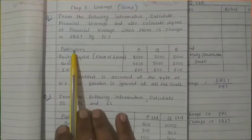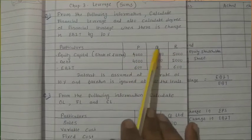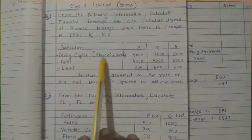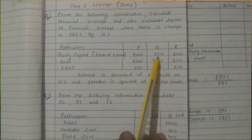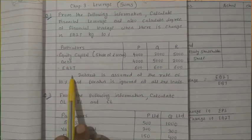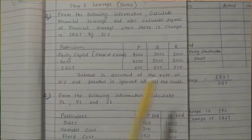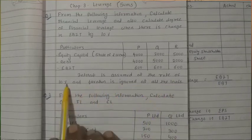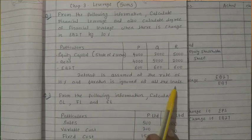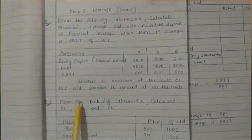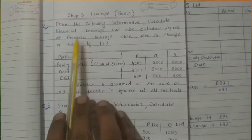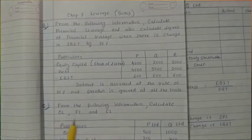So, particulars P, Q and R — three firms are given. Equity share capital of rupees 10: 4000, 2000, 5000. Debt: 4000, 5000, 2000. And EBIT: 600, 600, 600. Interest is assumed at the rate of 10% and taxation is ignored at all levels. Before answering this question, you should know the format of financial leverage, the formula of financial leverage, and the degree of financial leverage.